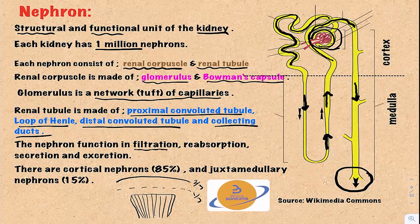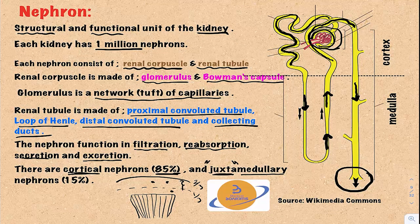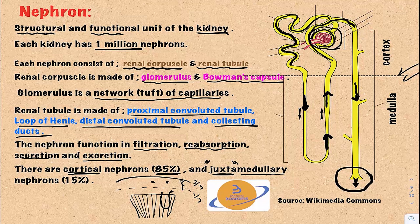The nephron functions in filtration, reabsorption, secretion, and excretion, ultimately leading to urine production. There are two types of nephrons based on the location of the renal corpuscles. When the renal corpuscles are in the outer two-thirds of the cortex, these are cortical nephrons, representing 85% of nephrons. When the renal corpuscle is in the inner third of the cortex, closer to the medulla, these are juxtamedullary nephrons — and their loop of Henle dips more deeply into the medulla.